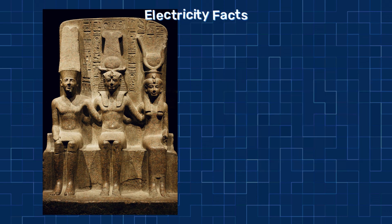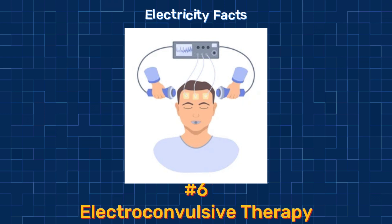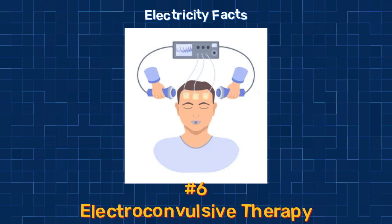Electricity can do many things, including a special kind of therapy called electroconvulsive therapy. In this therapy, patients get electric shocks that make them have seizures, which can help with some mental problems.